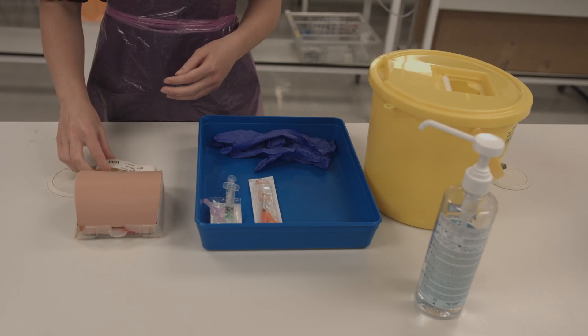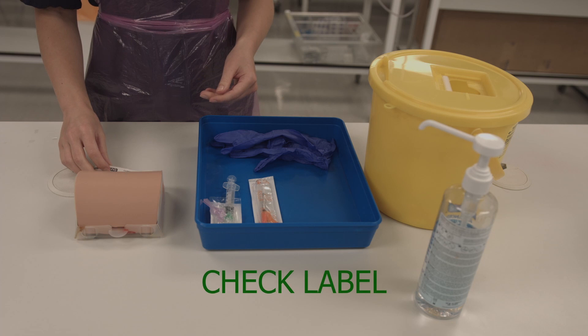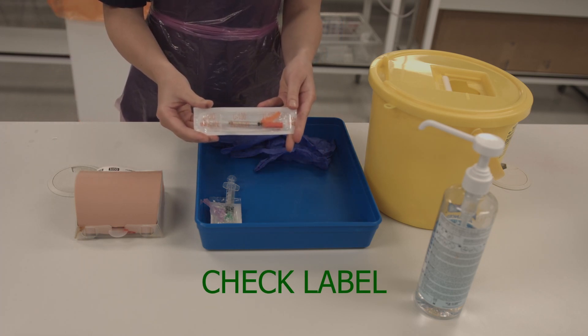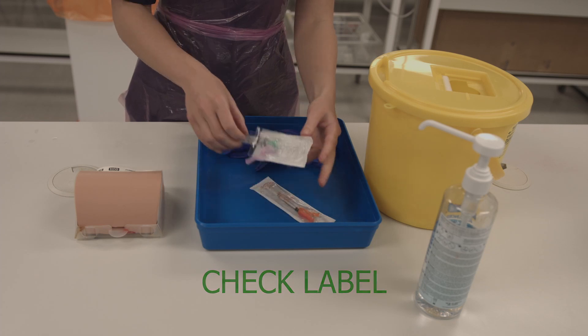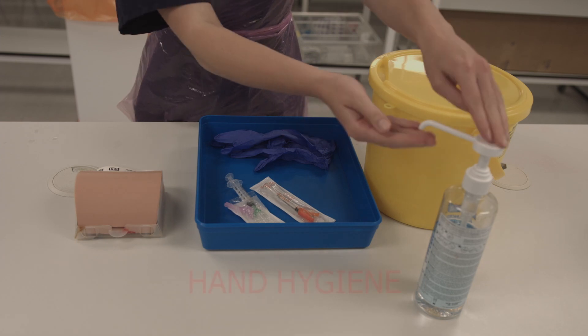Start by confirming the identity of the patient by looking at their wristband. You can then check that you have the right needles with the right drugs if relevant. There should be a green needle for IM injection and an orange one that may be pre-filled for subcutaneous injection.